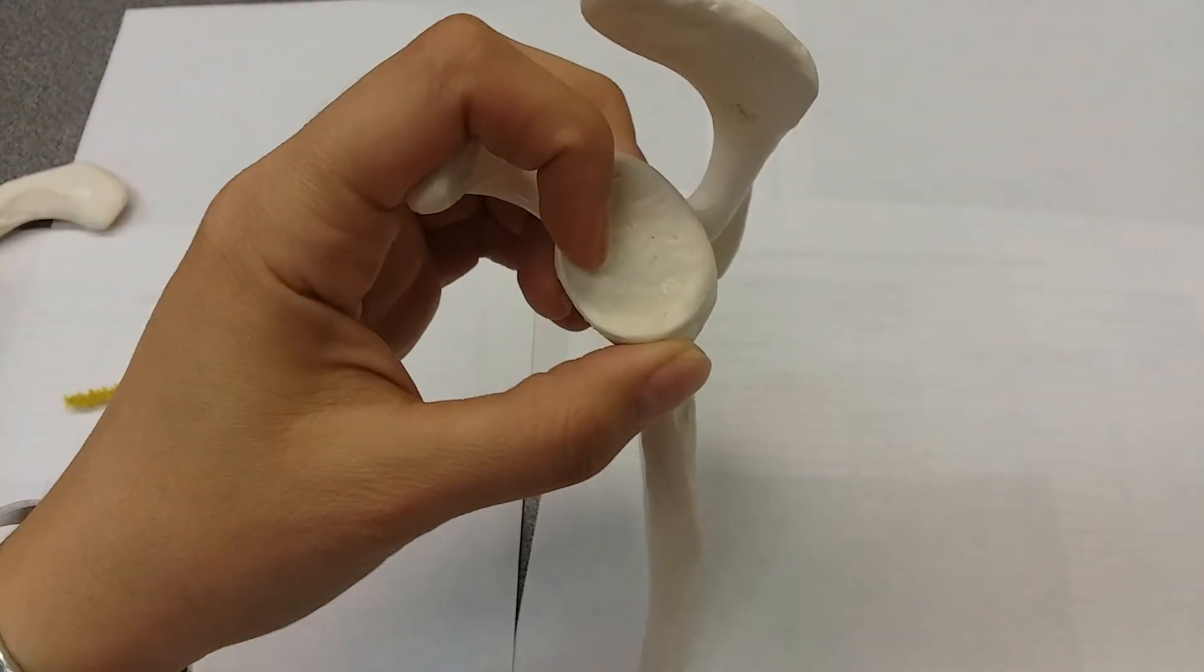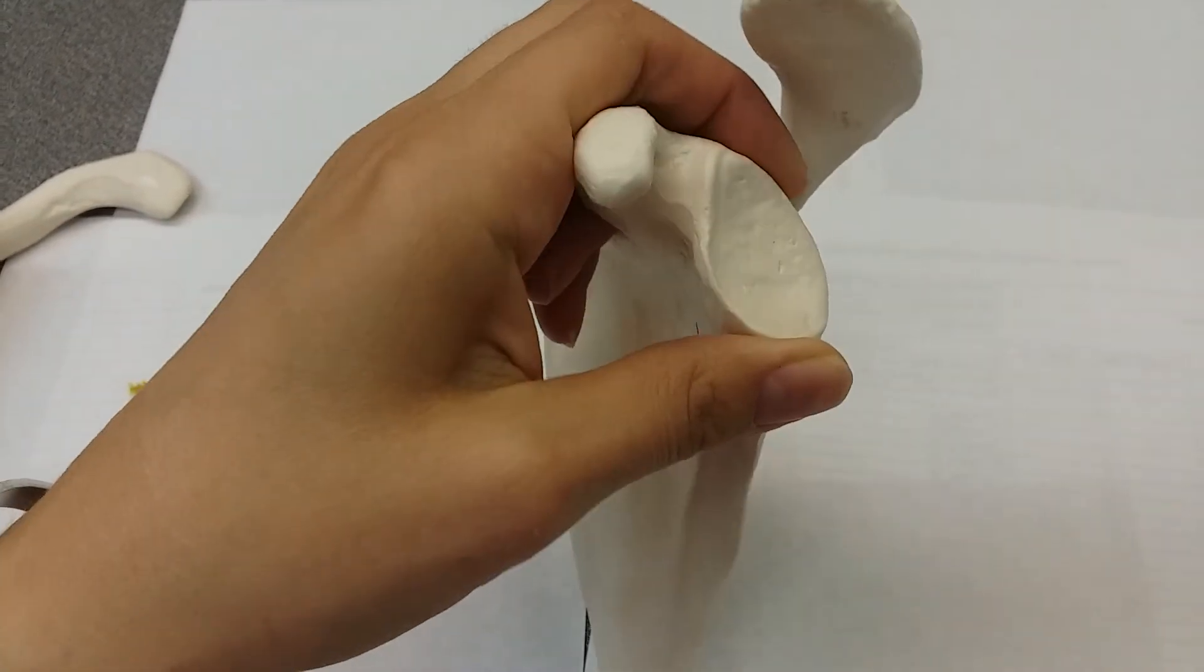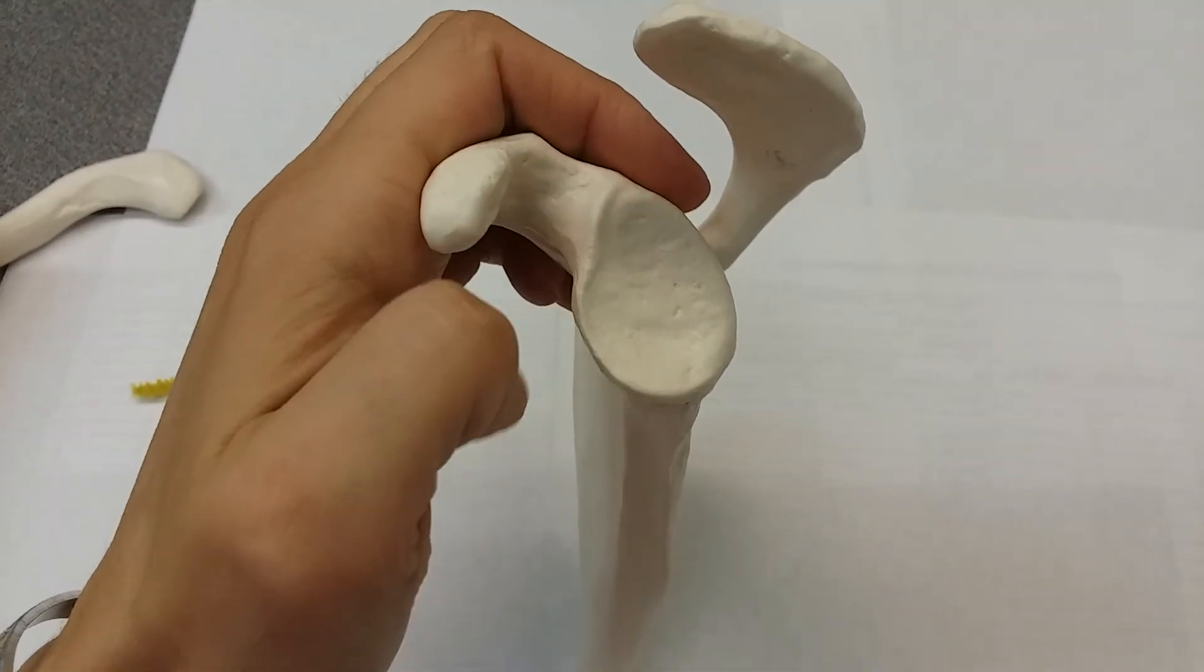So your glenoid cavity, if we're looking right here, this is your glenoid cavity. This is where your humerus is going to articulate.